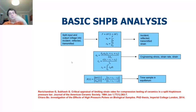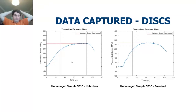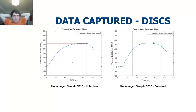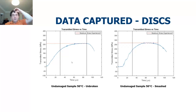We use the basic split Hopkinson pressure bar analysis — the input pulse and the transmitting pulse — to work out the stress and strain of the system. For consistency we always used engineering stress and engineering strain. We also worked out the time to sample stress equilibrium. This shows the data we captured: transmitted stress versus time for an unbroken system, and transmitted stress versus time for a system which broke. The flat period in the response was taken as the maximum transmitted stress.